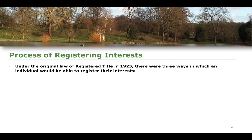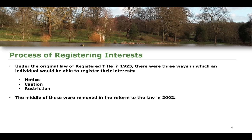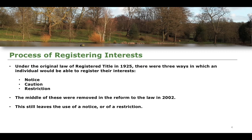Under the original law of registered title going back to 1925, there were three ways in which an individual could register their interests to make clear to a potential purchaser that the interest would bind them: through a notice, through a caution, or through a restriction. When the law was reformed by the Land Registration Act 2002, cautions were removed. So for the most part we are focusing on notices and restrictions. Let's spend this lesson focusing on the idea of a notice in the register.